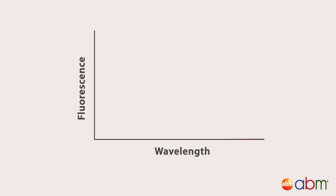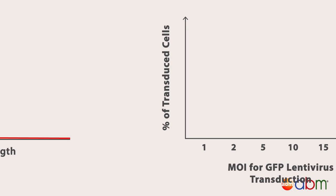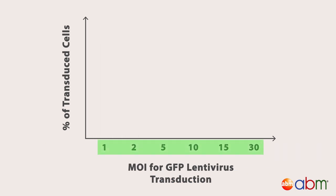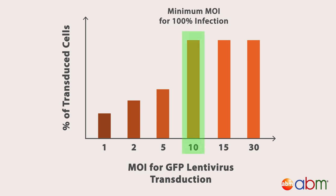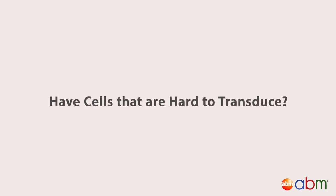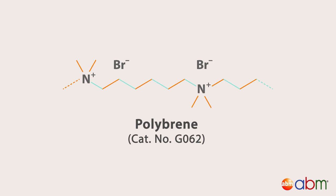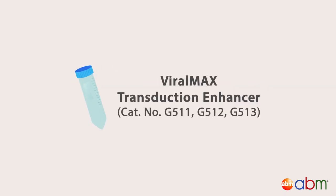Next, record the fluorescence at the various MOIs to determine your transduced cell percentage. Select the minimum MOI at which all the cells are expressing the transgene. For example, a minimum MOI of 10 may be required for 100% infection of the target cells. If your cells are naturally harder to transduce, there are transduction enhancers such as polybrene or ViralMax transduction enhancers to increase infectivity performance.